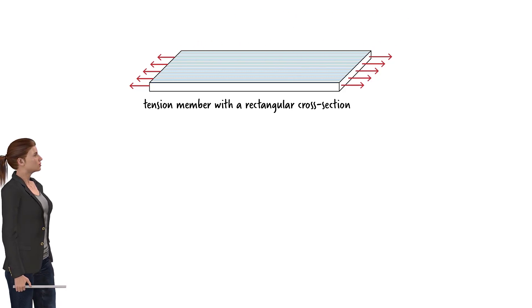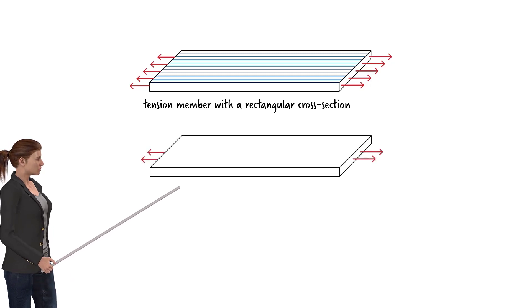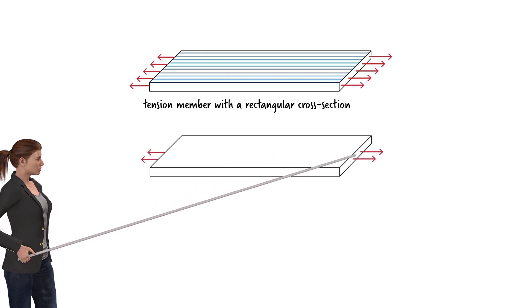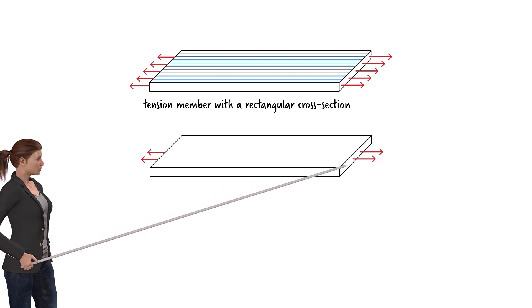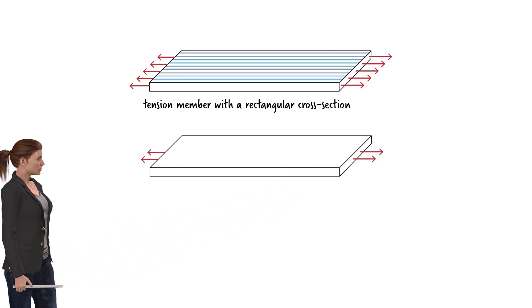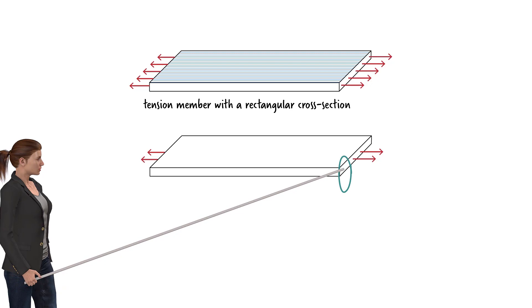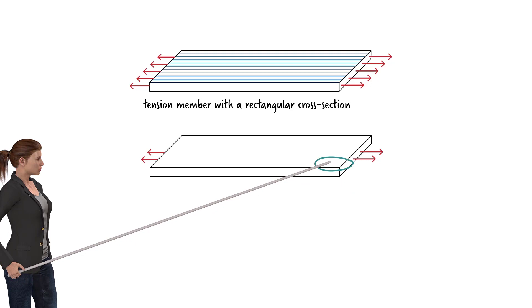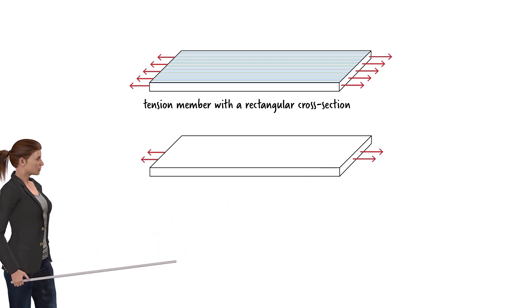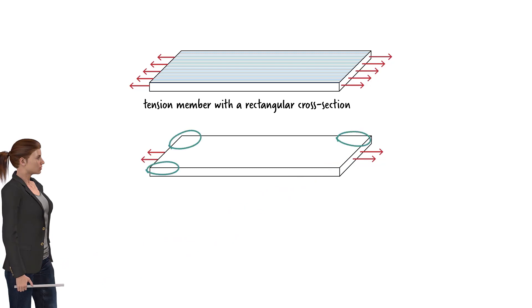Now suppose the axial force is acting only on a part of the member, like this. This part of the cross-section is loaded, while the other parts are load-free. Therefore, at the ends of the member where the axial force is applied, only the loaded part is stressed. Since no load is present in the other parts, no axial stress develops in the regions near the corners of the plate. Similarly, the axial stress vanishes in the regions near the other corners of the plate.